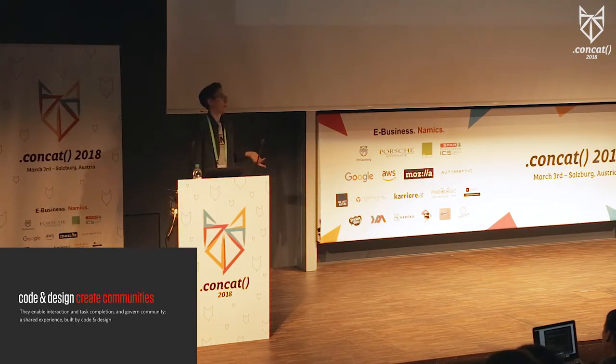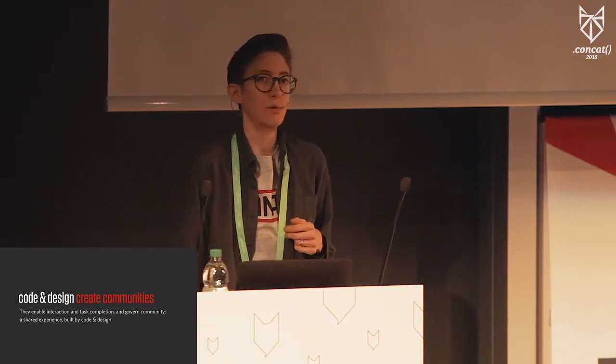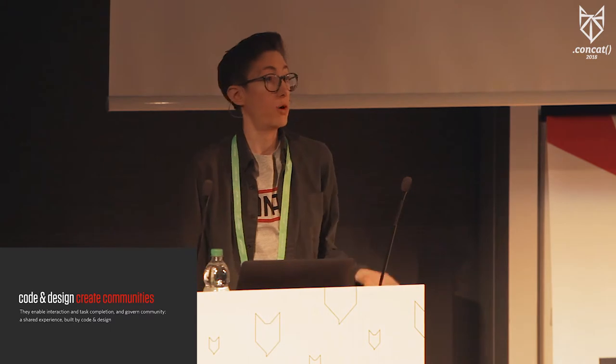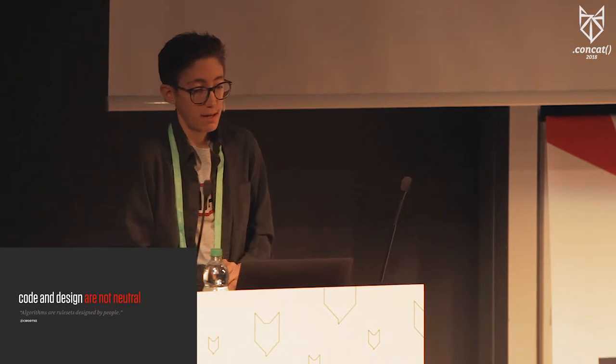Code and design are critical because they enable and govern these interactions. They make them possible or not possible. They can allow people to get things done and make connections, but they also allow us, in some contexts, to be pretty terrible to each other. And we, as the people working on these things, build experiences that are inclusive or not. And we can exclude because, as the title of my talk says, they are not neutral. They invite people to participate and they leave people out.